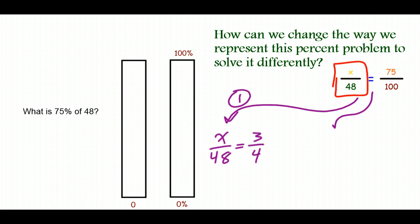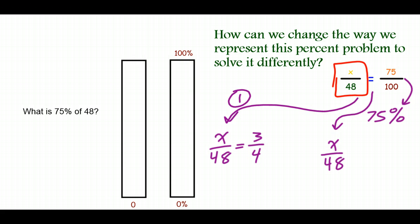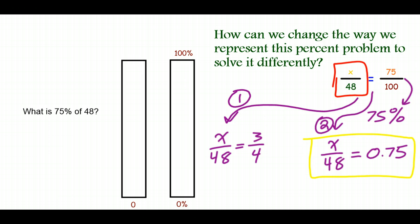Another thing we could do is change that percent fraction into a decimal. We know 75 over 100 represents 75%, and from our lesson on converting between fractions, decimals, and percents, we know that 75 hundredths as a decimal is 0.75. So X over 48 equals 0.75. This equation — X divided by 48 equals 0.75 — is much more similar to the initial types of equations we started solving, and is easier to solve than using cross products.